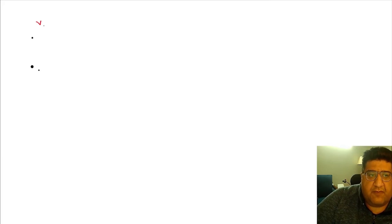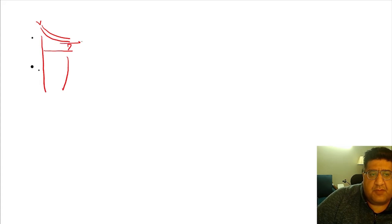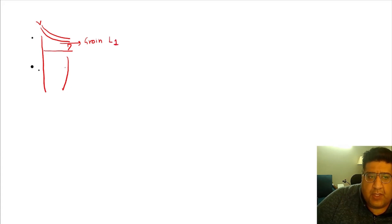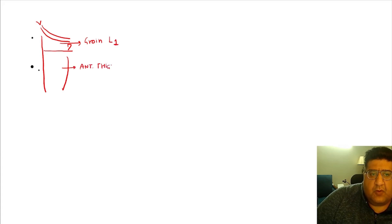To sort it out, I want you to know that when we talk about dermatomes, this portion is basically the groin, which has a sensory supply by L1. This portion is basically the anterior thigh, which has a sensory supply by L2.